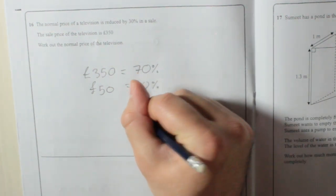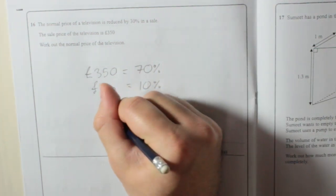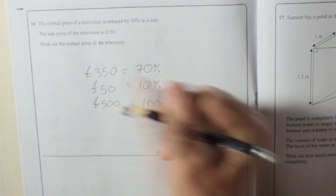100% is going to be, that's times 10. So times that by 10, £500. That's the answer: £500.